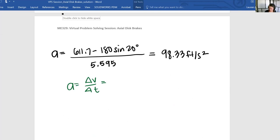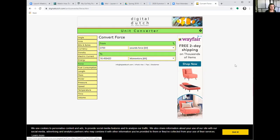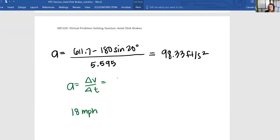Acceleration equals Δv / Δt. She was going 18 miles per hour - I hope she was wearing a helmet. We need that in feet per second. I've shown you this site before, digitalDutch.com. Go to speed: 18 miles per hour equals 26.4 feet per second. Assuming she wants to come to a complete stop, Δt = 26.4 / 98.33 feet per second squared.